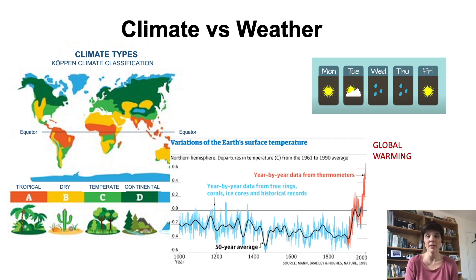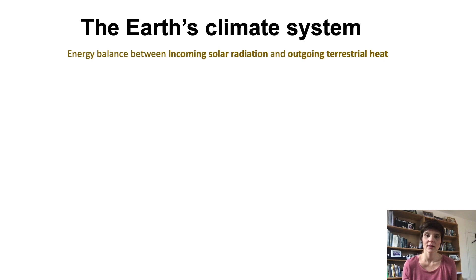And it's true that in this warmer world, extreme weather events like heat waves, floods or hurricanes happen very often. But how does the Earth climate system work?